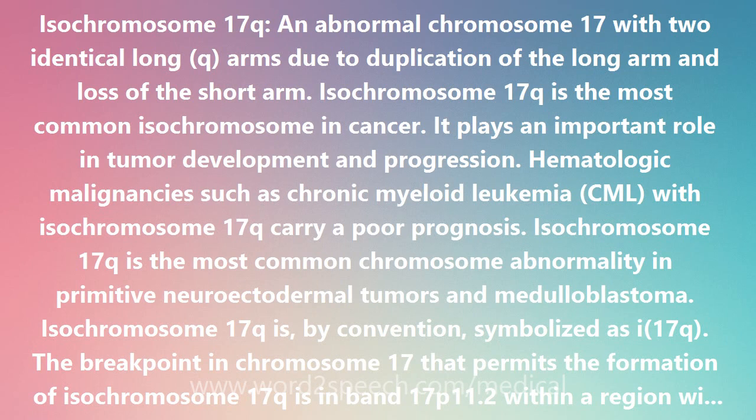It plays an important role in tumor development and progression. Hematologic malignancies such as chronic myeloid leukemia (CML) with Isochromosome 17Q carry a poor prognosis. Isochromosome 17Q is also the most common chromosome abnormality in primitive neuroectodermal tumors and medulloblastoma.